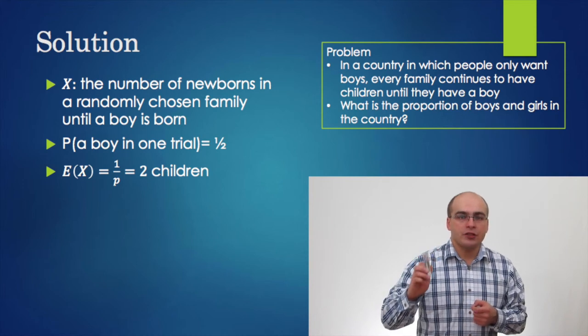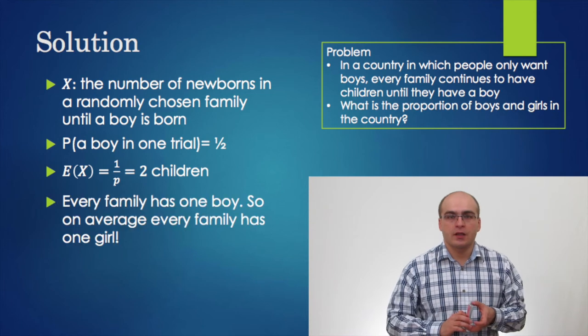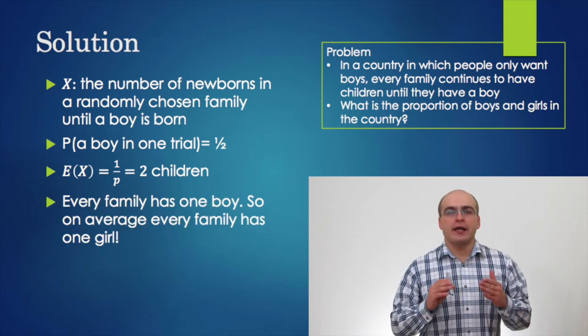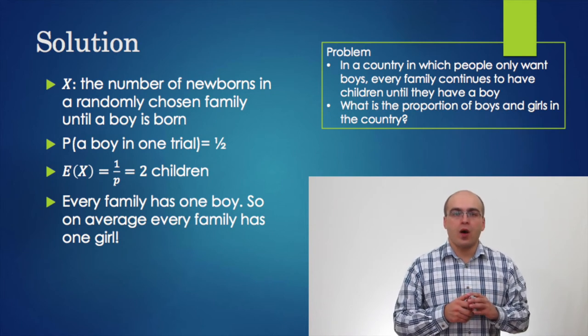So, on average, every family has 2 children. On the other hand, every family has a boy. So, on average, every family has 1 boy and 1 girl.